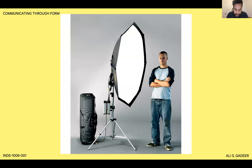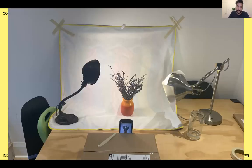Remember to find ways to diffuse your light. The larger the light source, the softer the light. By that principle, the closer your light source is to your subject, the larger it is. You can use paper to cover your lamp or a white sheet to help soften that light source. You don't necessarily need access to a studio or studio equipment to get a studio feel for your images.